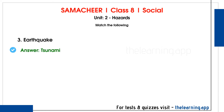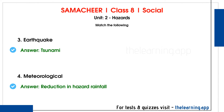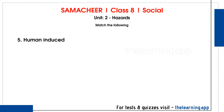Fourth question: meteorological - the correct answer is reduction in hazard rainfall. Meteorological hazards relate to weather conditions such as rainfall. Fifth question: human-induced - the correct answer is terrorism. Terrorism is a human-induced hazard.